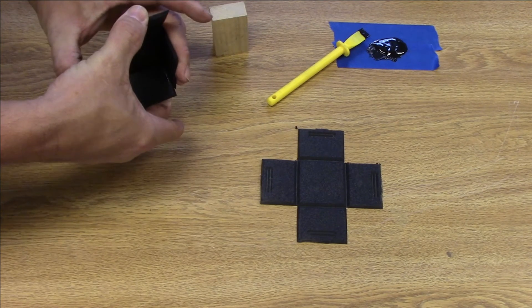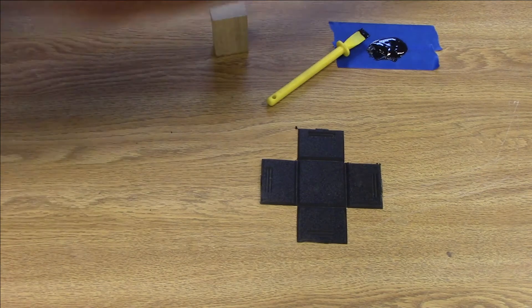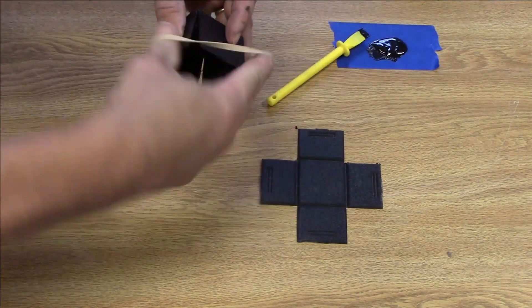Once the blanks were warm and malleable, I applied the epoxy to the edges, folded them together, and used a rubber band as a clamp.